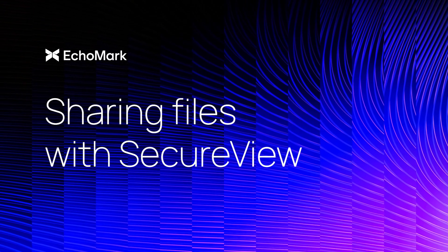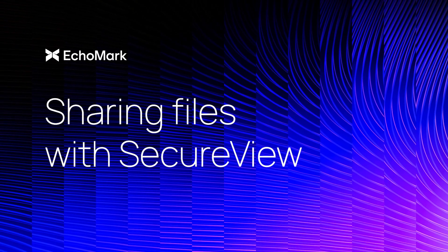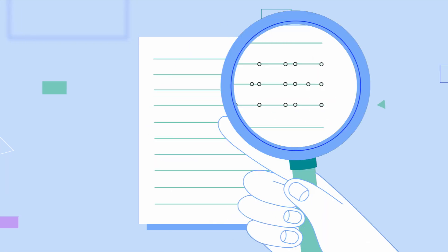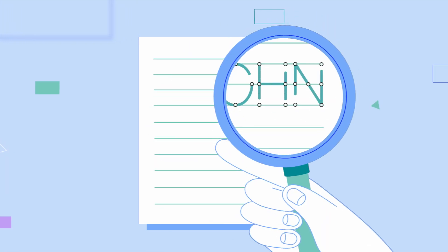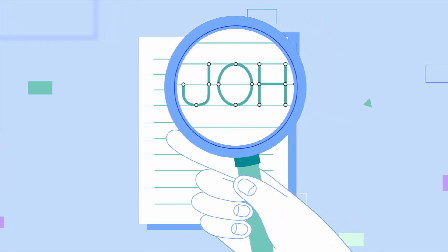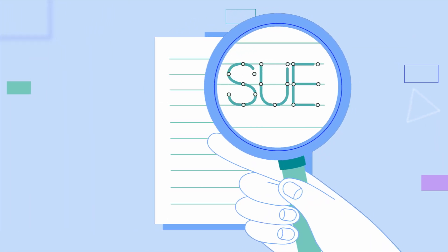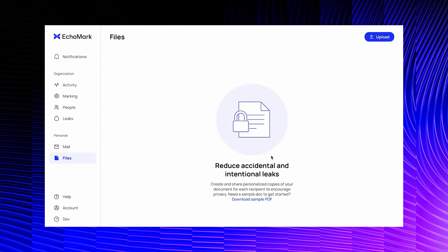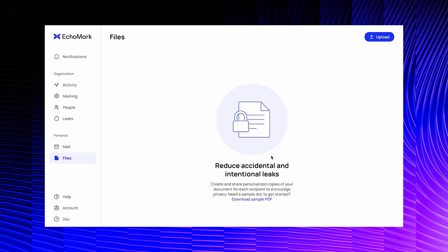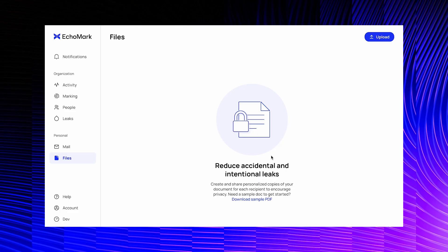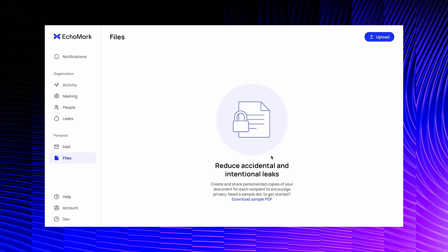Echomark protects your files from leaks by adding personalized and visible watermarks to document content that can be detected even if the file is leaked via mobile photo or printout. In this video, I'm going to show you how to share files with SecureView, which has the added benefit of preventing unwanted downloads or distribution.